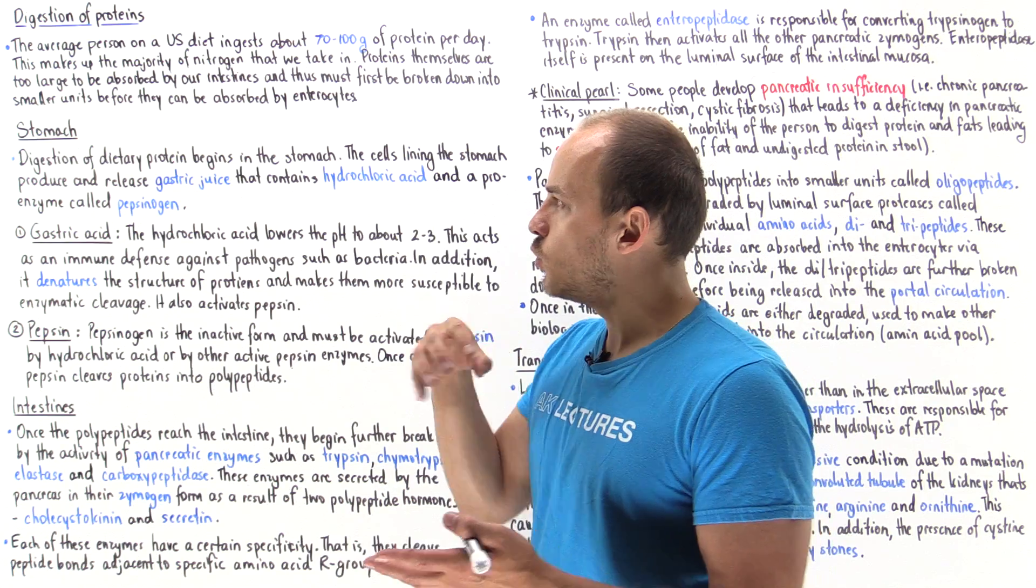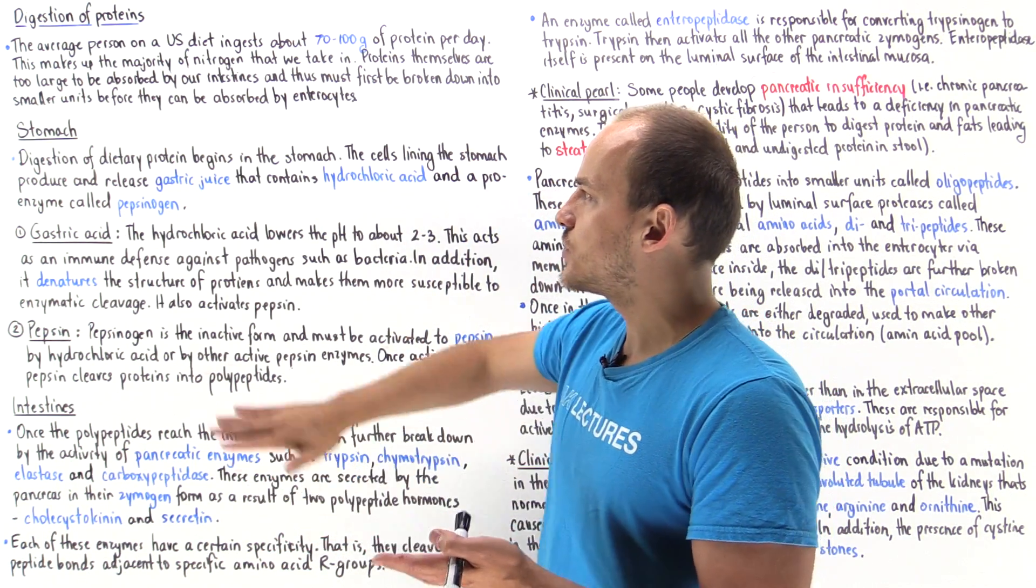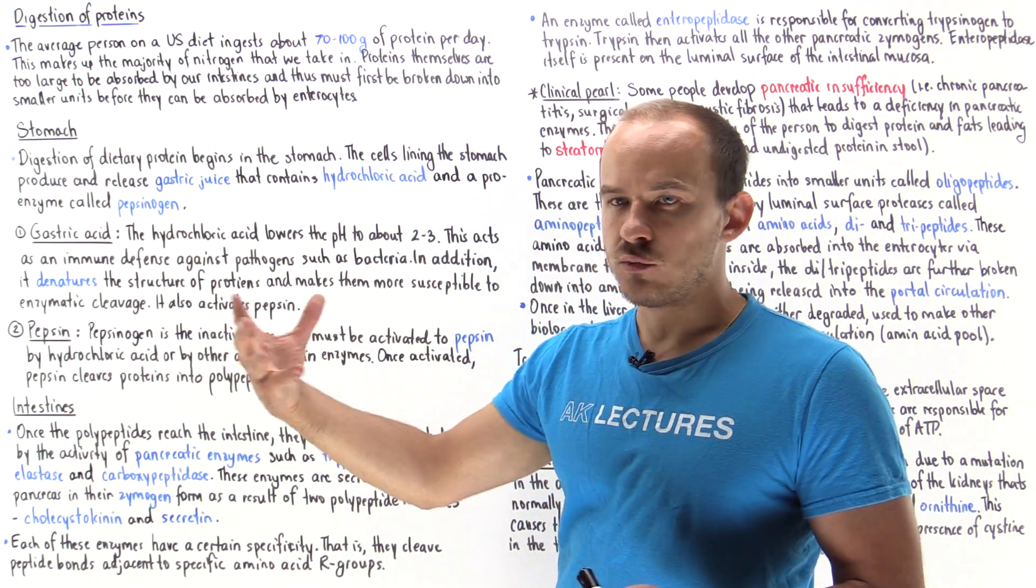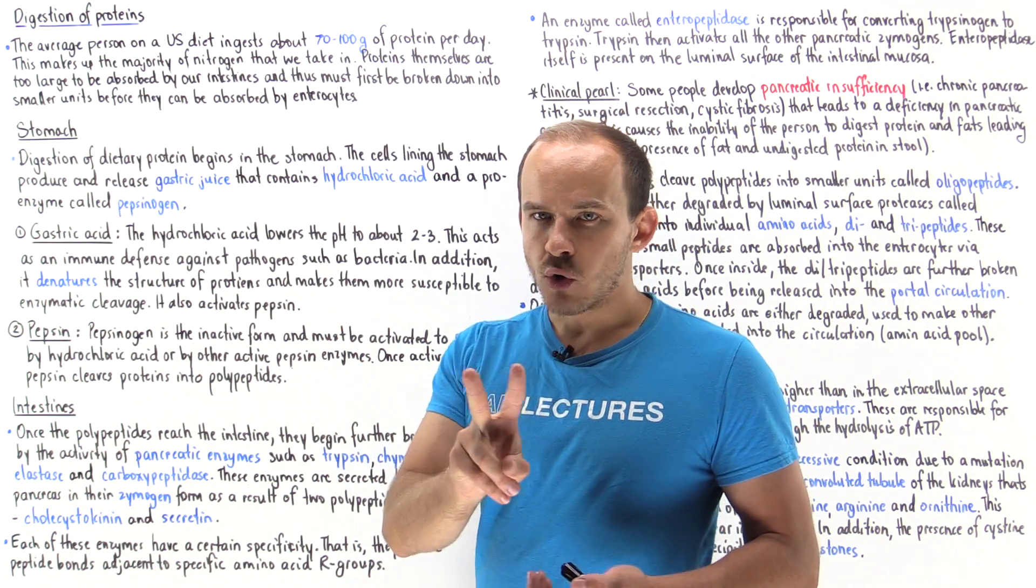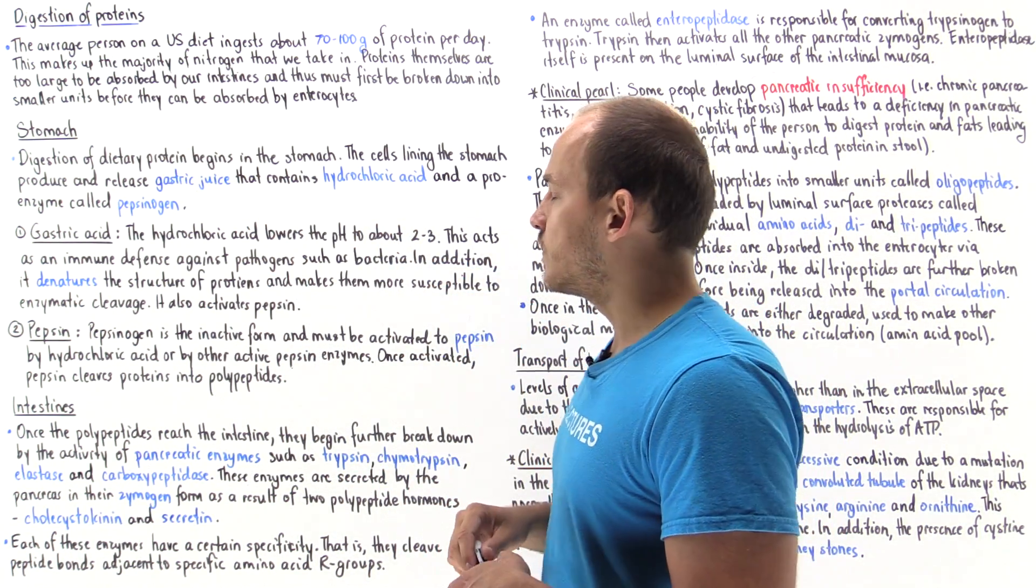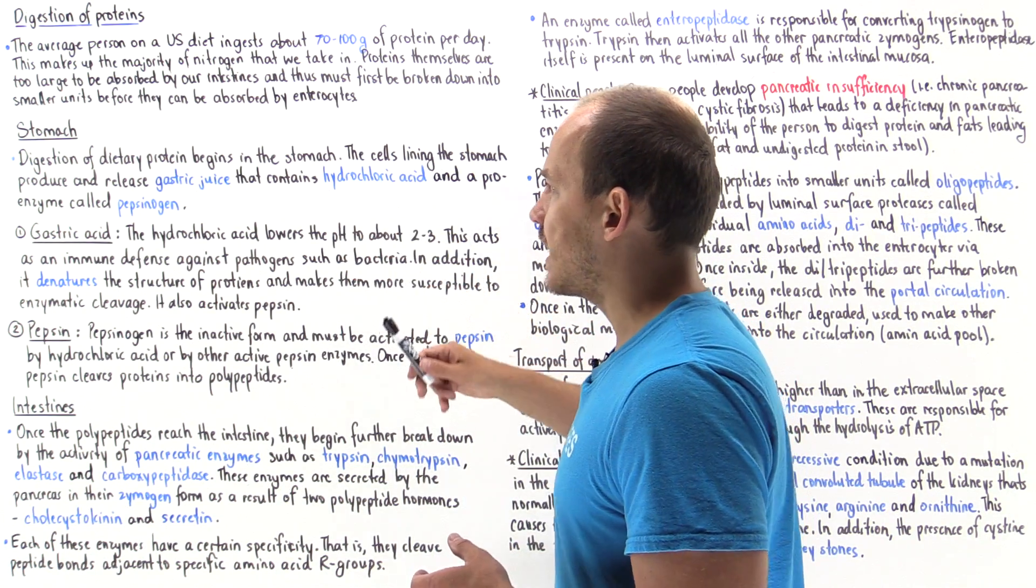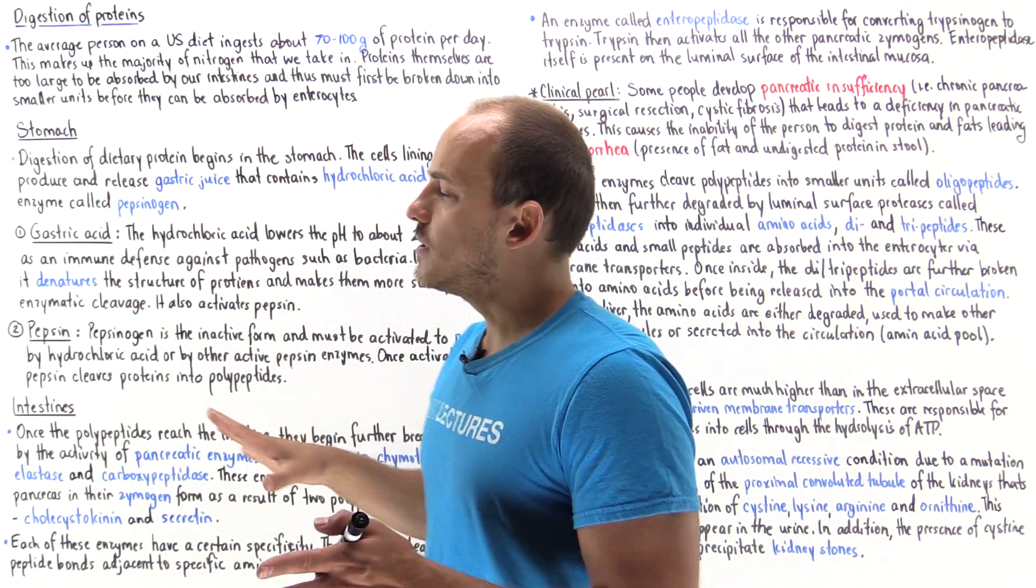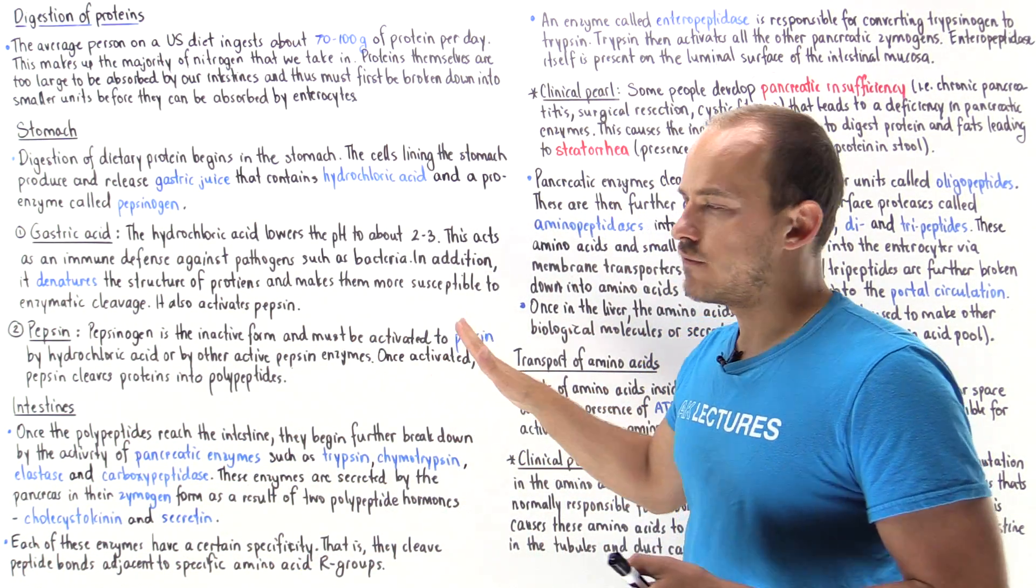When we ingest food, it basically becomes immersed within gastric juice found within our stomach. Two important components of gastric juice that are important to digestion of dietary protein are hydrochloric acid and pepsinogen. Let's take a moment and talk about each one of these components.